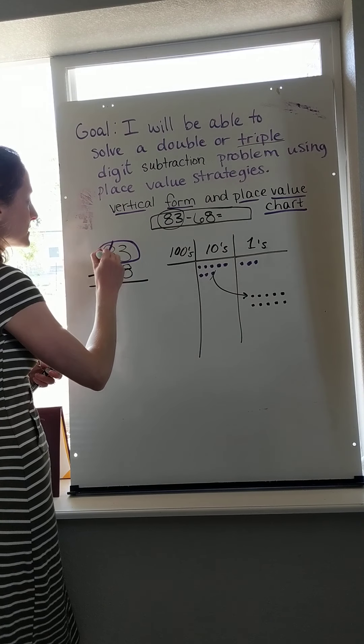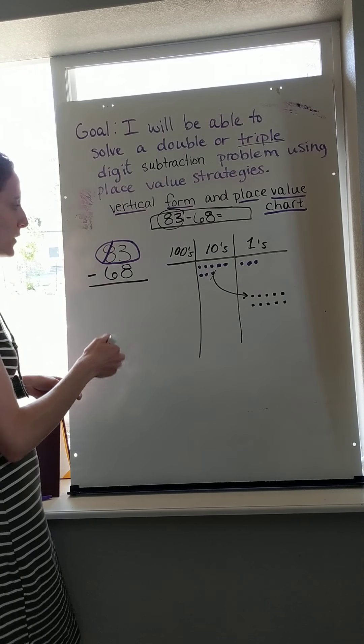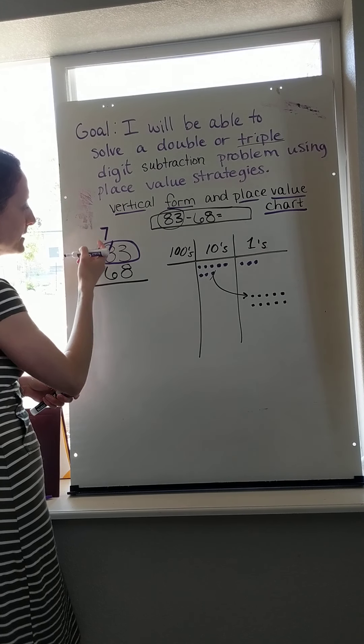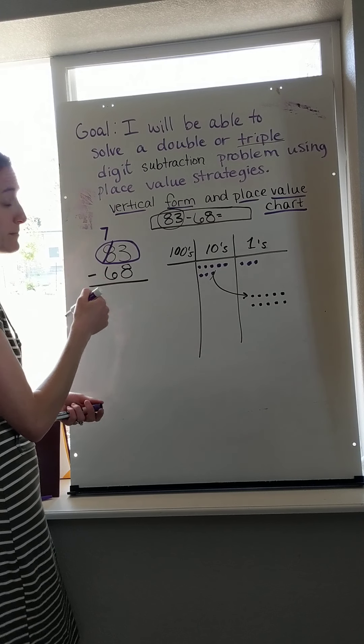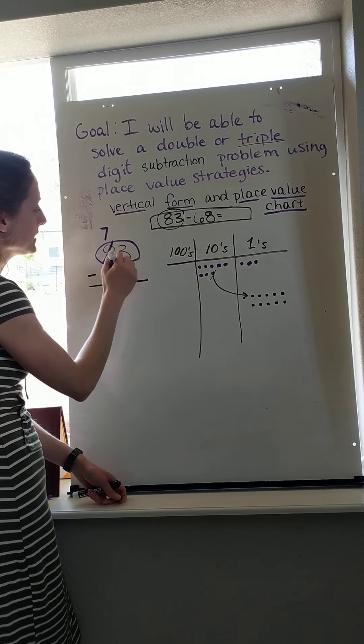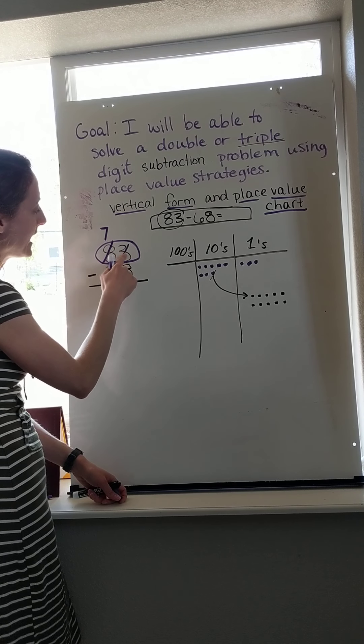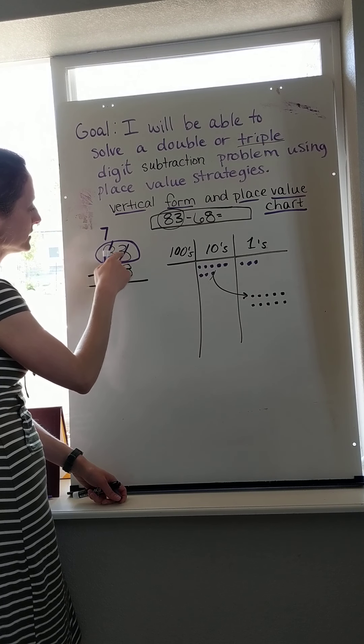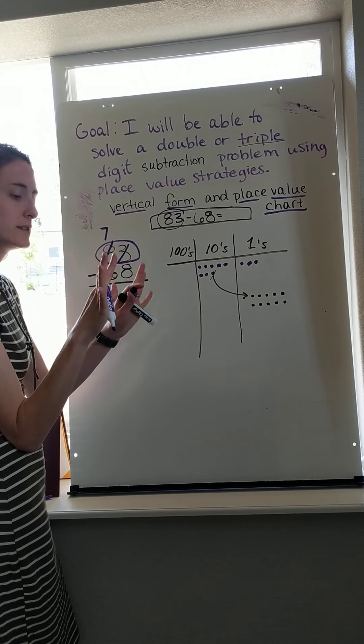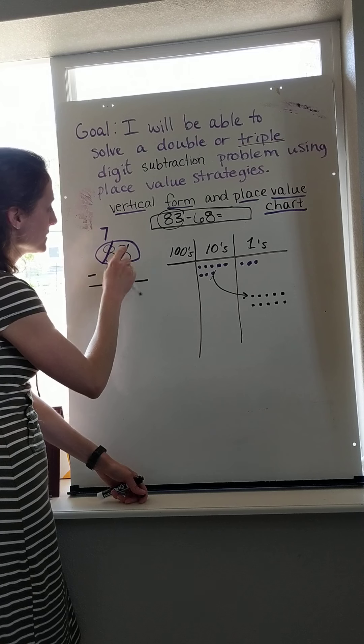If I say three minus eight I can't do it, I go next door, get ten more. So if I take one ten from eight tens, I only have seven left because eight minus one is seven. Where do I put that ten? I had three ones and I just took a ten from my tens place. When I unbundled it, it makes ten ones. Ten ones and three ones makes thirteen ones.